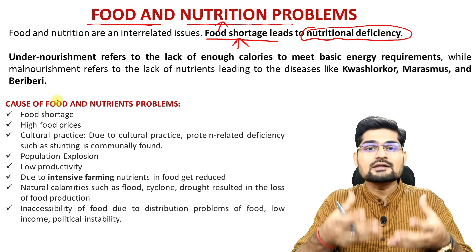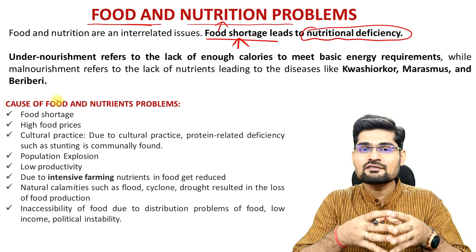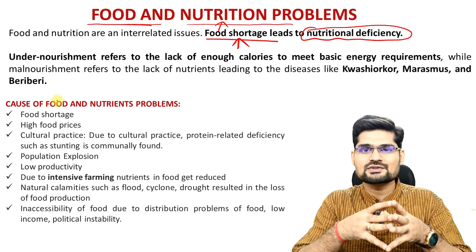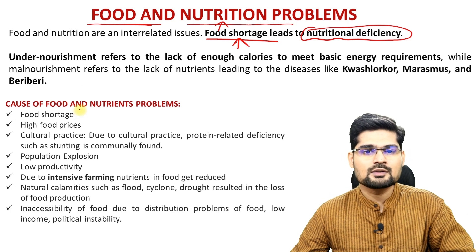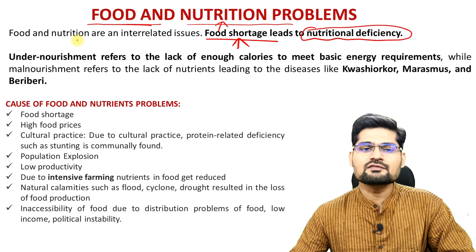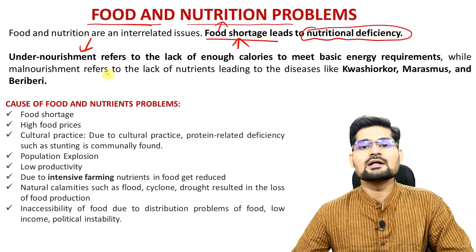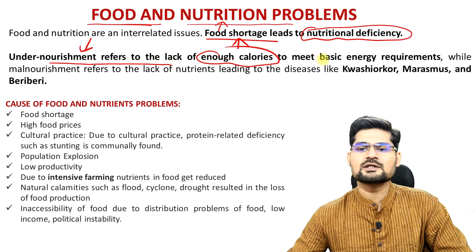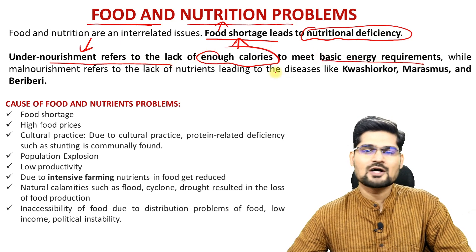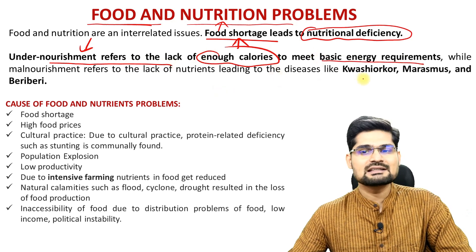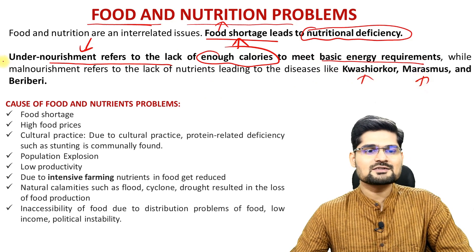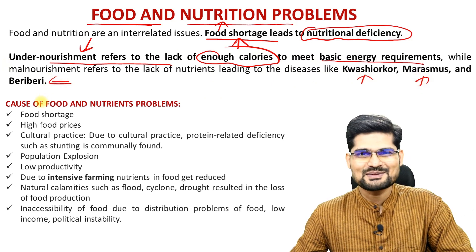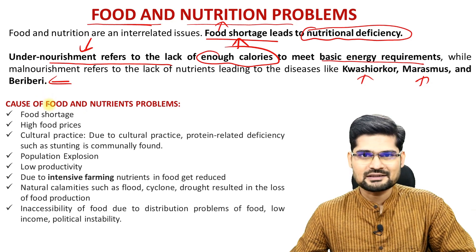So if you are not well nourished, it means you'll have problems of diseases around you, the health issues. The food and nutrition problem becomes one of the key areas of concern. Undernourishment refers to the lack of enough calories to meet basic energy requirements. And remember diseases like Kwashiorkor, Marasmus, and Beriberi, which were part of our NCERT in school days.